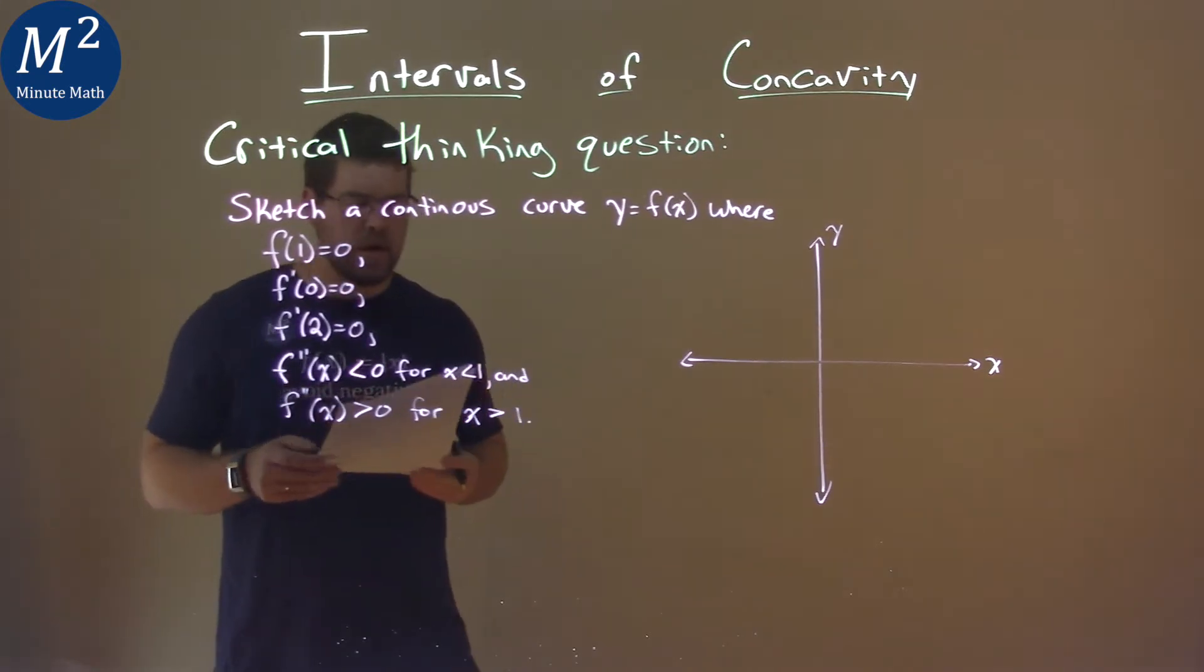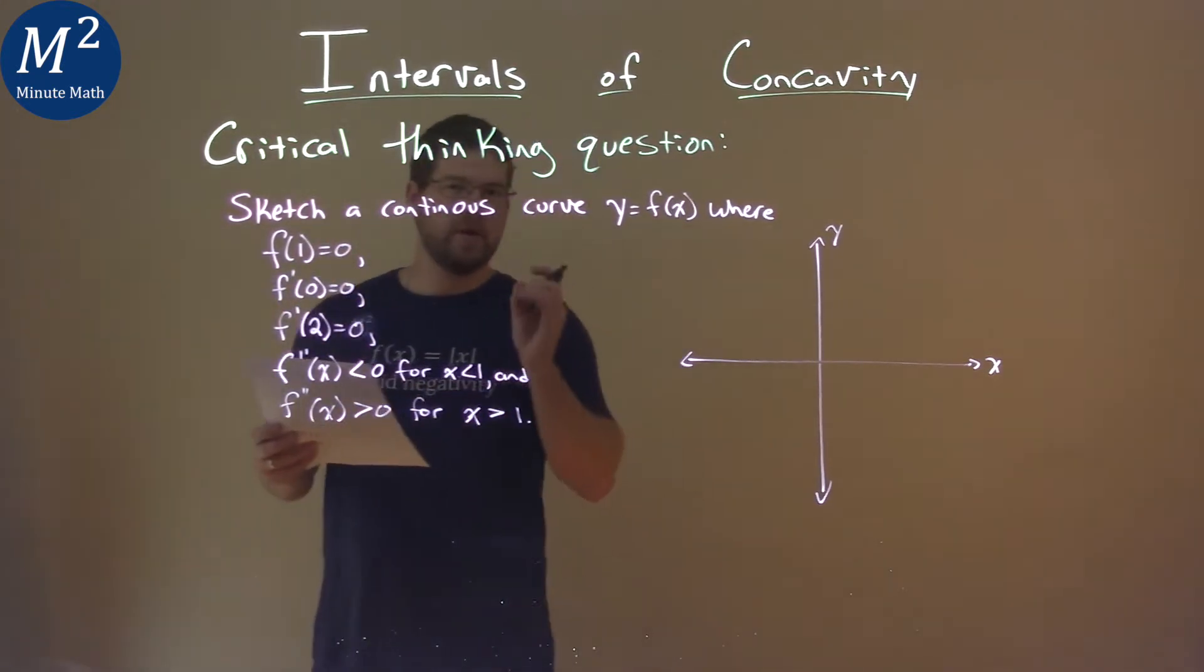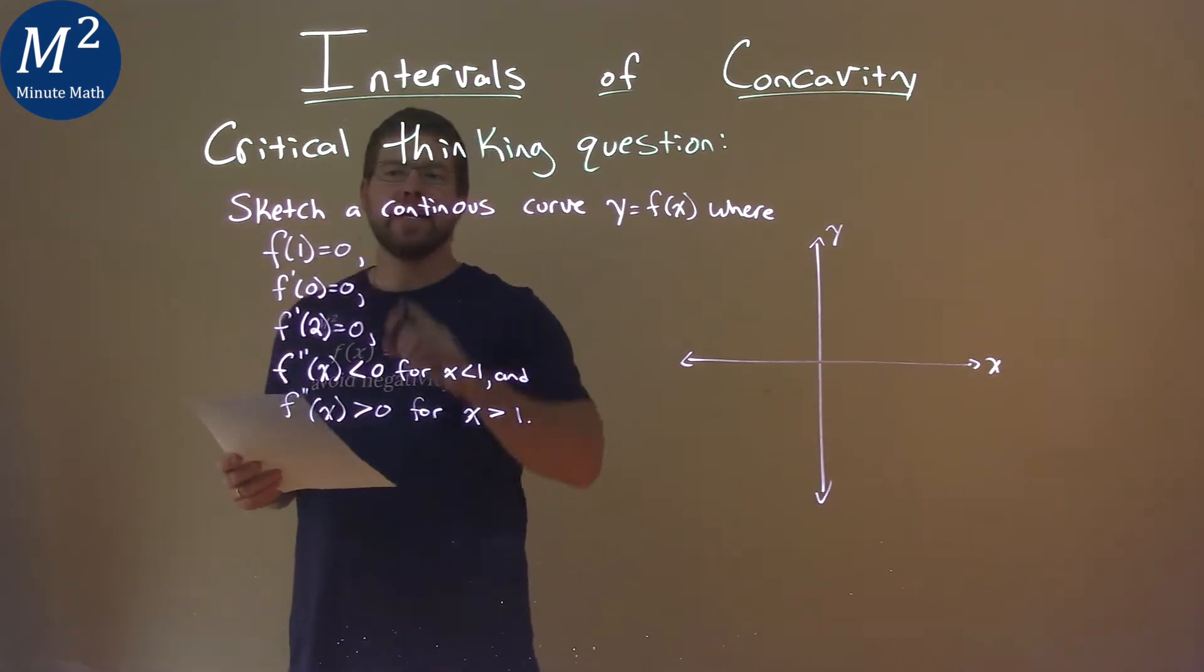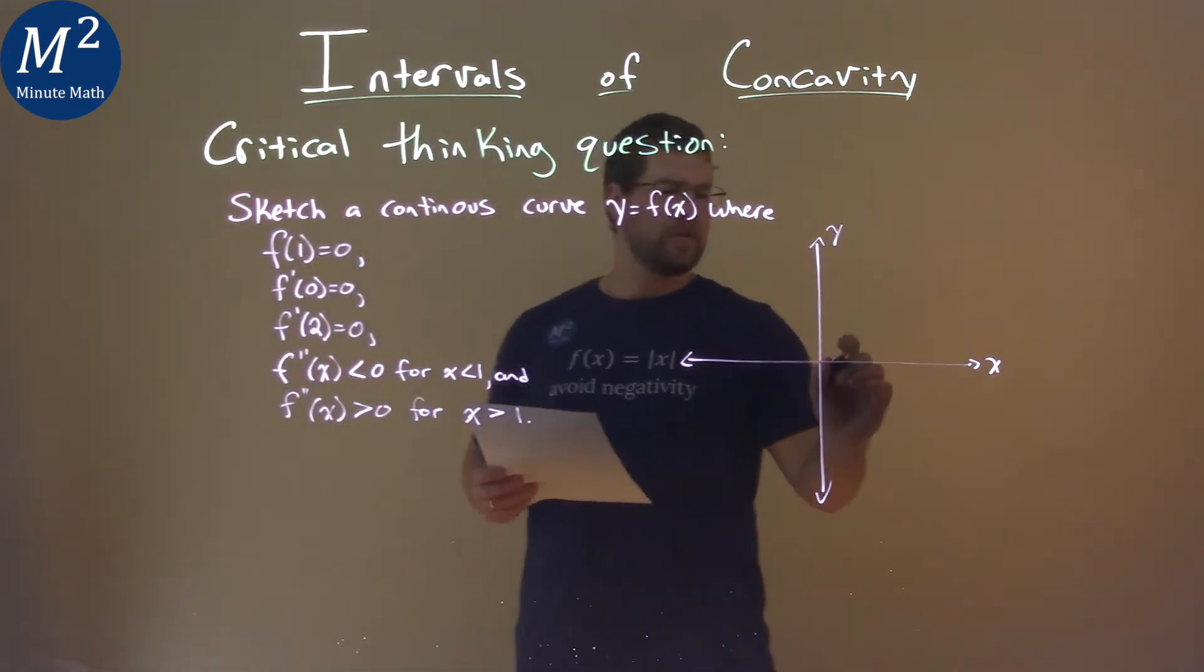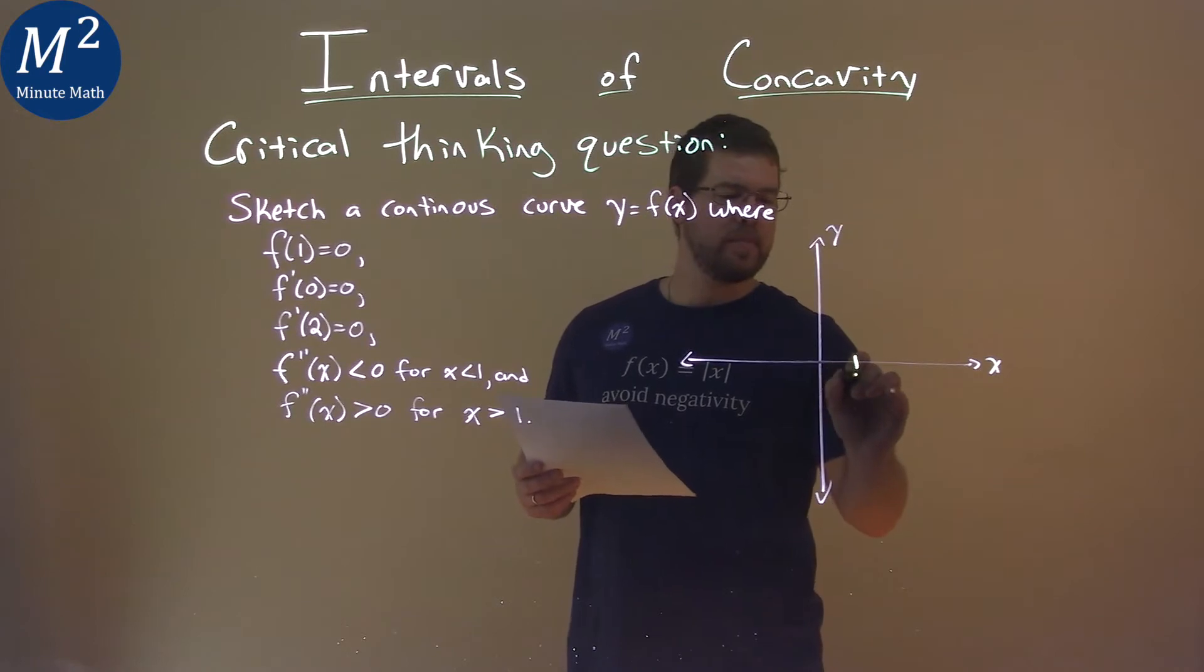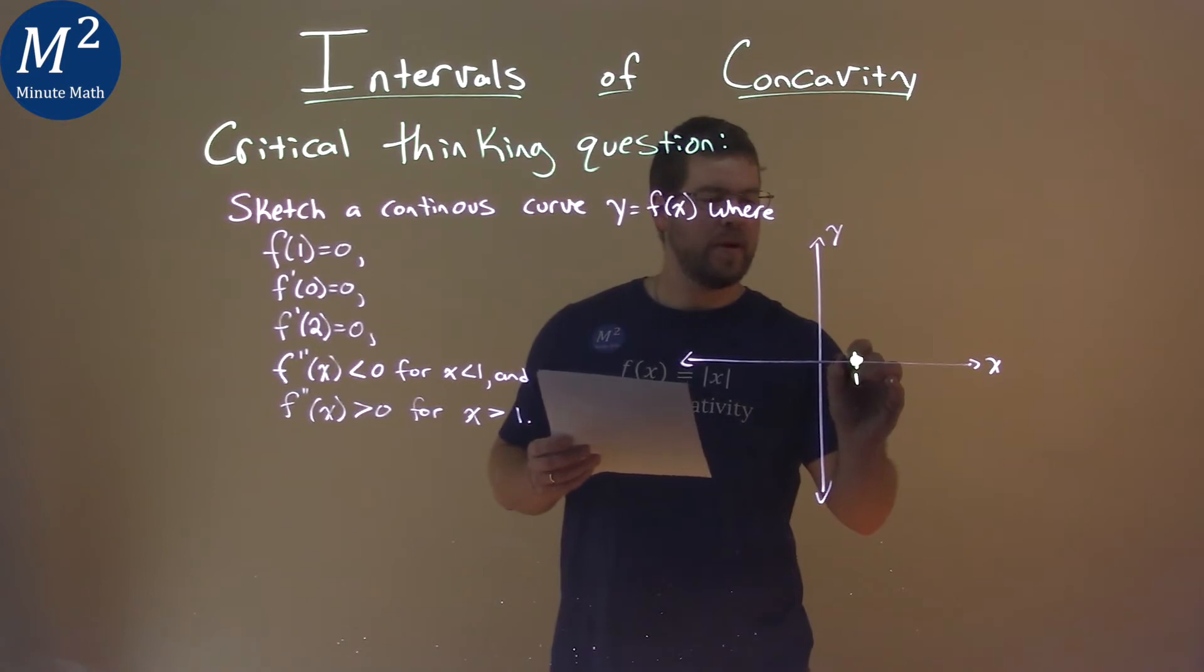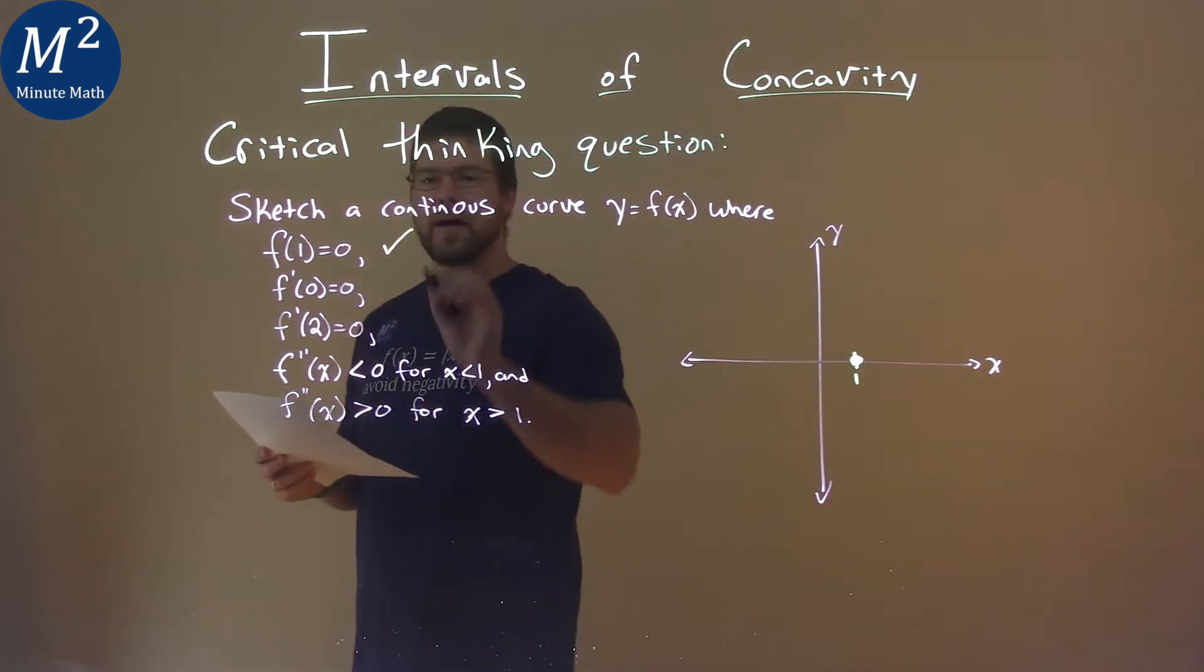When I first start with these, let's go with what we know specifically. It tells right off the bat that f of 1 equals 0. So let's call this point right here 1, and we have a point f of 1 equals 0. We got a point right there. All right, so we got that covered.